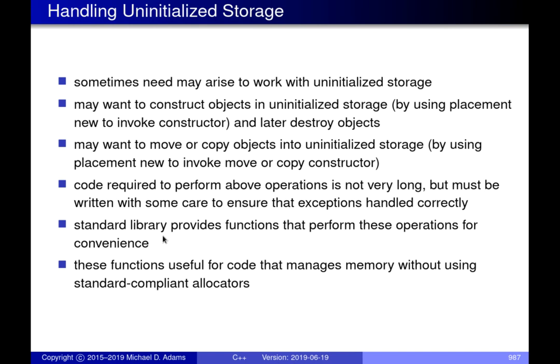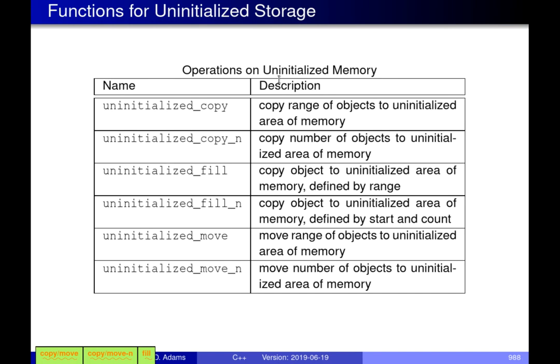Before I can go through the other two examples, I need to introduce a few functions from the standard library that are useful so we don't have to write them ourselves. When doing this kind of work, we sometimes need to work with uninitialized storage — a bag of bytes with nothing constructed in it — and do things like construct objects there or destroy objects we put there. There are convenience functions provided in the standard library that help with moving things into raw memory, copying into raw memory, and destroying objects.